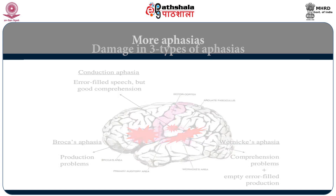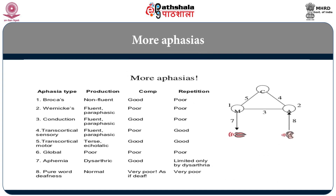There are various aphasia types: Broca's, Wernicke's, conduction, trans-cortical sensory, trans-cortical motor, global, anomia, and pure word deafness. One of the earliest attempts to model aphasia is the Lichtheim model. Geschwind and Lichtstein together offered this model: motor aphasia affects production, and Wernicke's aphasia affects comprehension.